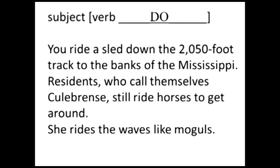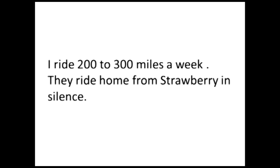Now let's take examples with a direct object. 'You ride a sled down the 2,050-foot track to the banks of the Mississippi' — 'a sled' is a noun phrase right after the verb, making it a direct object. 'Individual residents who call themselves curiperense still ride horses' — 'horses' is the direct object. 'She rides the waves' — 'the waves' is the direct object. Usually the direct object answers a 'what' or 'who' question: what do they ride? They ride horses. That noun phrase after the verb is usually a direct object.